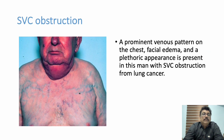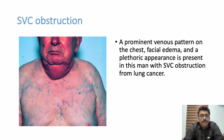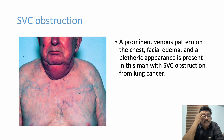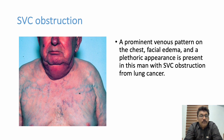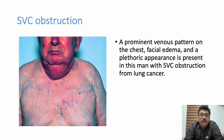In the photo, because the SVC is obstructed, the face is swollen and the neck is swollen. You can see a large number of collateral blood vessels draining blood from the upper part of the body. Normally blood goes through the SVC, but now it is blocked and goes through the IVC via these collaterals. Prominent venous congestion and distended veins over the chest wall should give a clue about SVC obstruction.